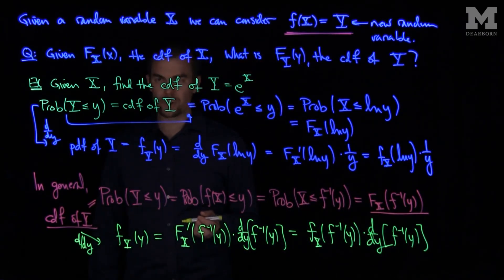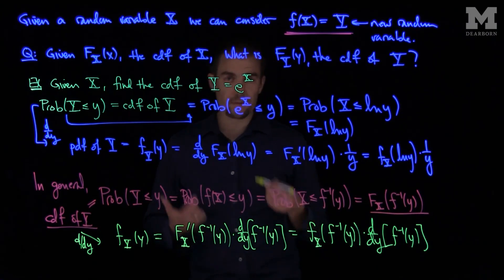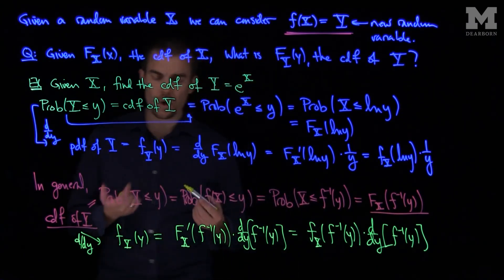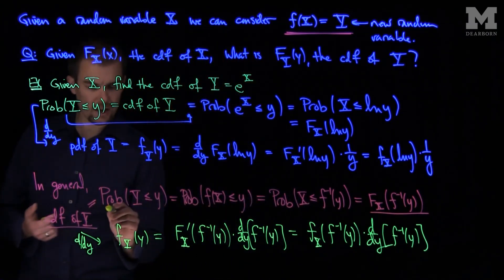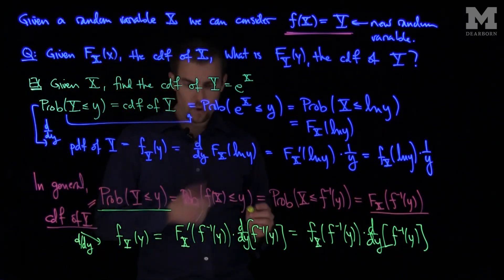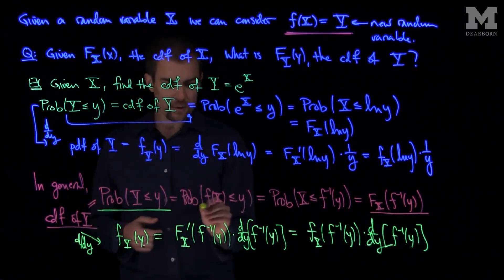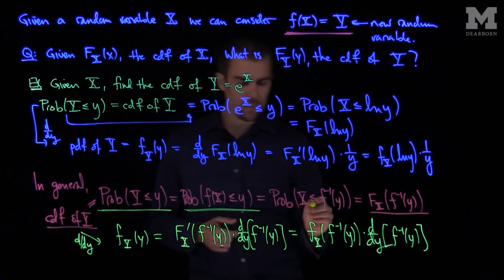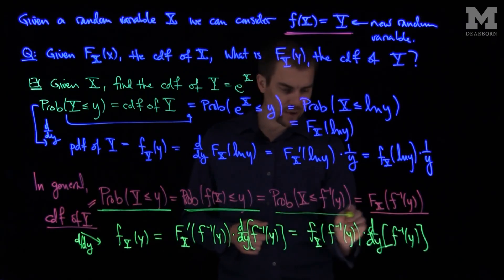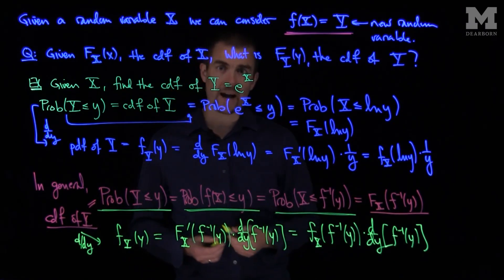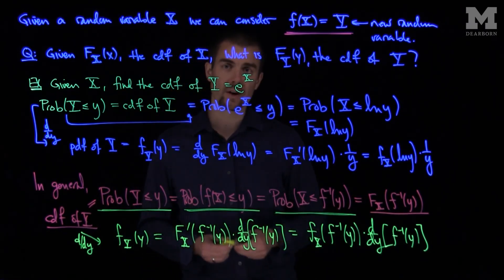So when we're asked to find the PDF of a transformed random variable, we always start with the CDF of the transformed variable, write down the transformed function in terms of X, and then apply the inverse of the transformation to write it in terms of the CDF of X, which is given to us. Thank you very much.